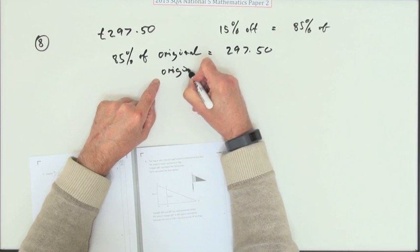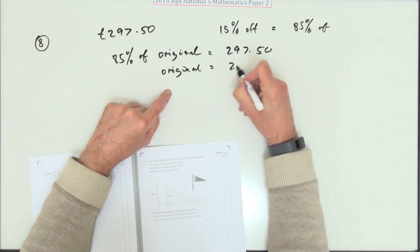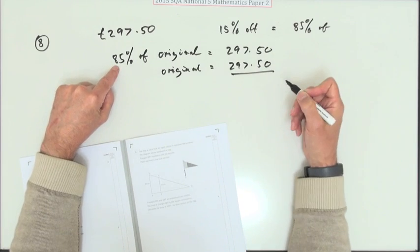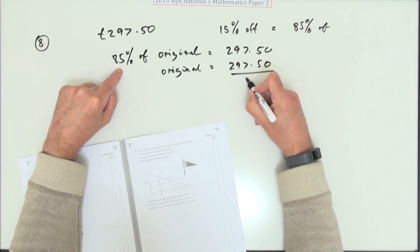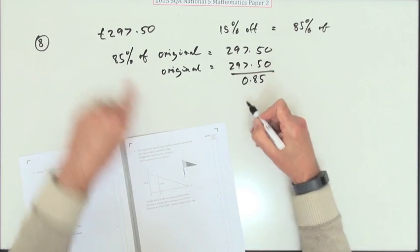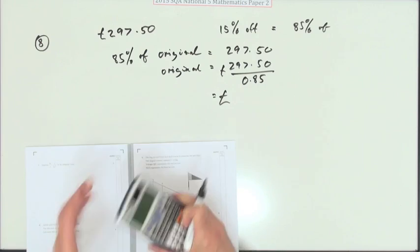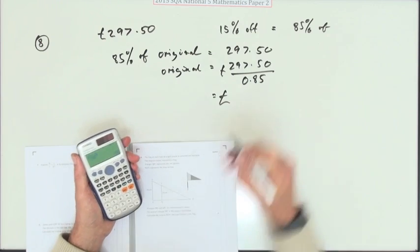So how would I get the original price? That'll be the £297.50 divided by 85%, but dress it up as a decimal 0.85 so you can put it into your calculator. That'll be the amount: a nice £350.